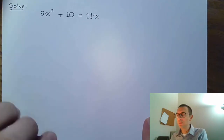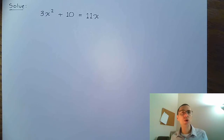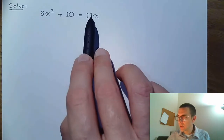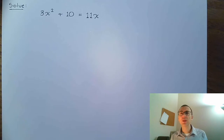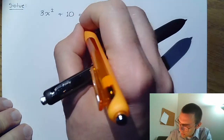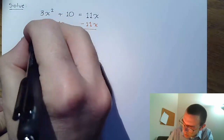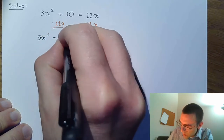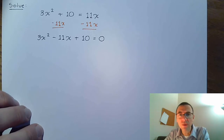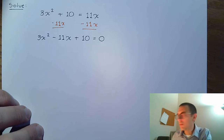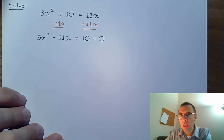The next equation is 3x squared plus 10 equals 11x. At first glance there are no fractions, no radicals, nothing weird. I see x squared, an x term, and a constant — so in my mind this is quadratic. To solve a quadratic equation, I should first get everything on the same side. Let's subtract 11x on both sides, making sure to write terms in descending order: 3x squared minus 11x plus 10 equals 0. Now let's talk about the progression of methods for solving a quadratic.